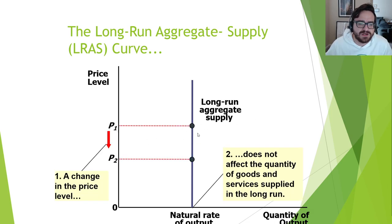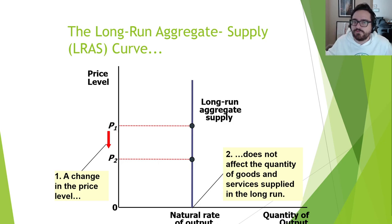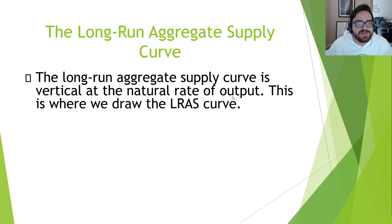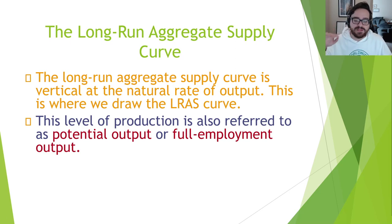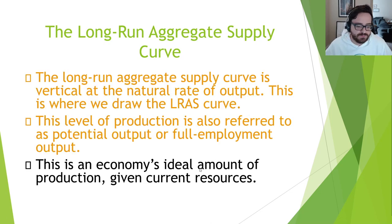That X value doesn't matter what the price level is, because in the long run those price level changes will always correct themselves — price level goes up, we decrease supply, it comes back to the normal spot. So the LRAS is vertical at the natural rate of output. It's also referred to as potential output or full employment output — these terms are interchangeable and represent your ideal production given your current resources.